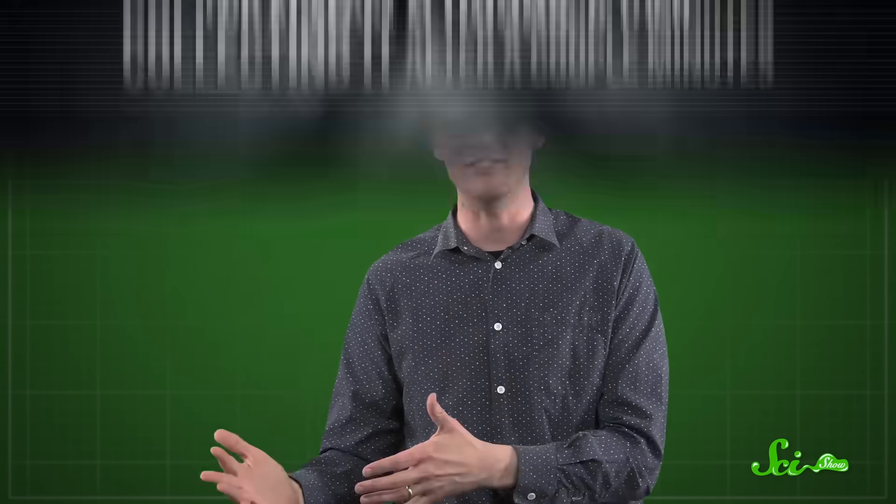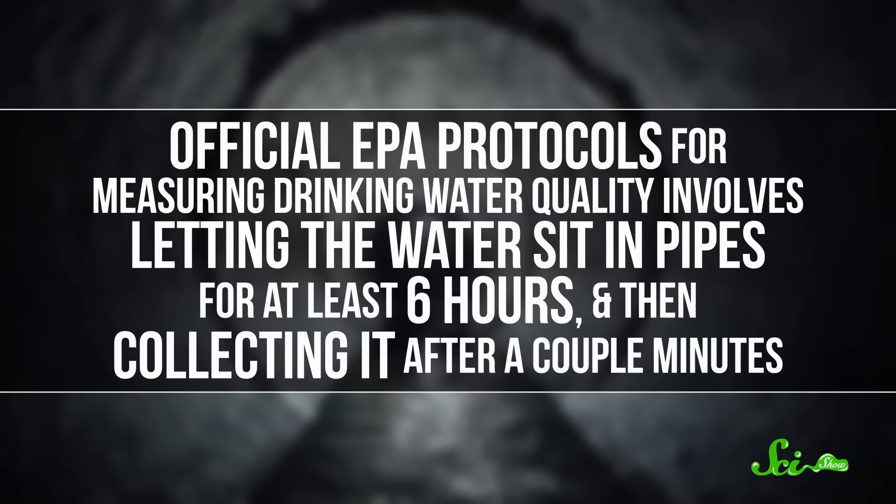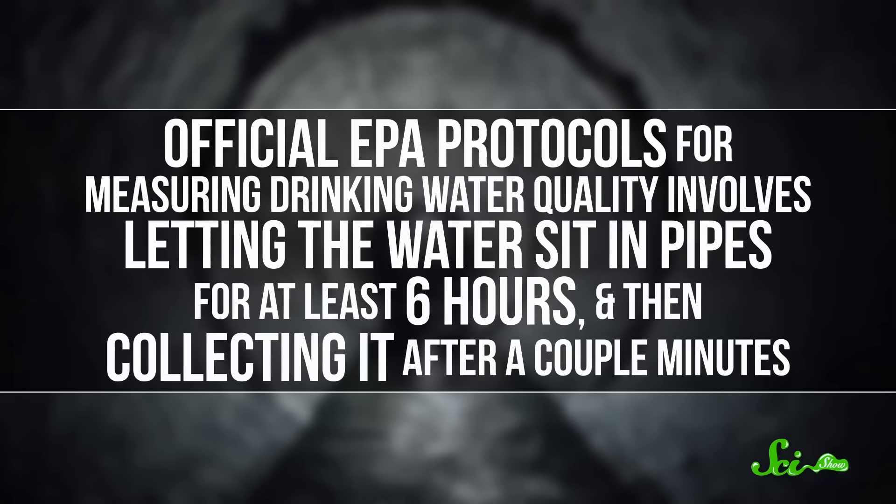And besides randomly supercontaminated samples being right next to uncontaminated samples because of flakes, the protocols for testing for lead can be manipulated to make it less likely to record how contaminated the water actually is. Official EPA protocols for measuring drinking water quality involves letting the water sit in pipes for at least six hours, and then collecting it after a couple minutes.